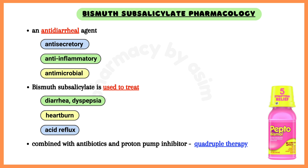Bismuth subsalicylate is also combined with antibiotics and a proton pump inhibitor to eradicate Helicobacter pylori. This is called quadruple therapy.